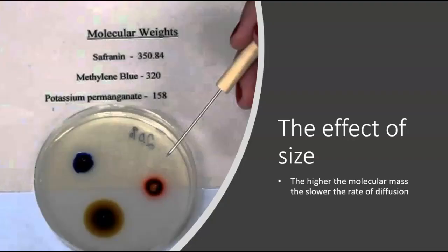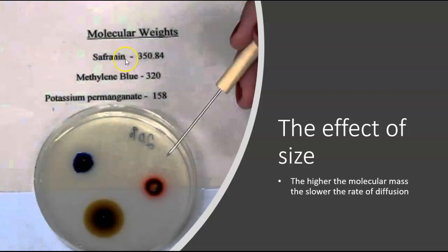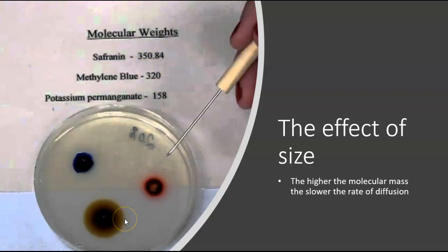Here's another example with three different dyes: saffranin, methylene blue, and potassium permanganate. Saffranin has the highest molecular weight, and potassium permanganate has the lowest. So potassium permanganate has diffused the fastest, and saffranin has been diffusing the slowest. This has to do entirely with their molecular weights — the higher the molecular mass, the slower the rate of diffusion.